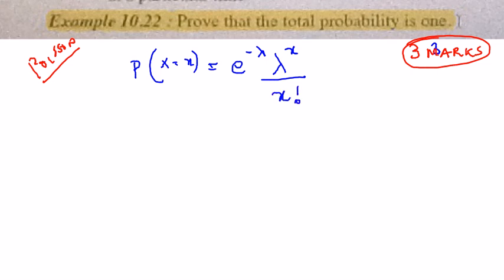Now they have asked you to prove that the total probability is 1, that is the sum of all probabilities. So that is if I am going to take the sum of all from x equals 0 to infinity.